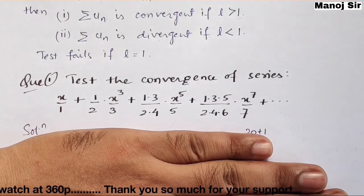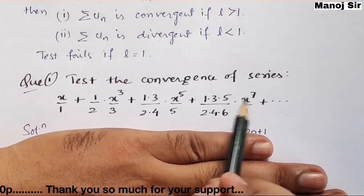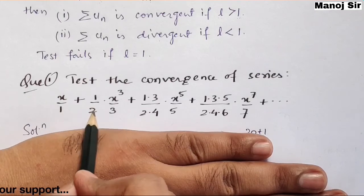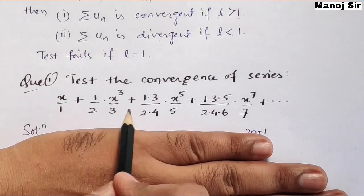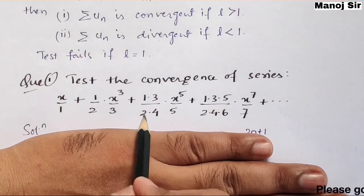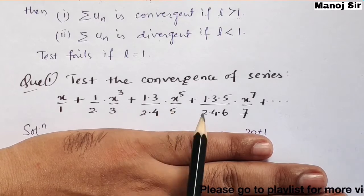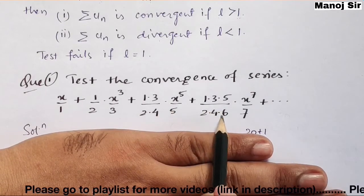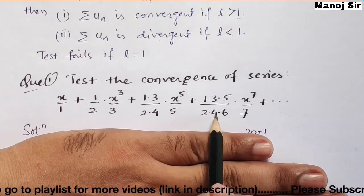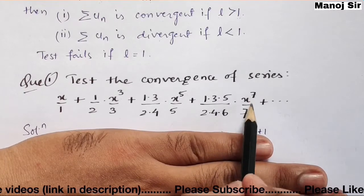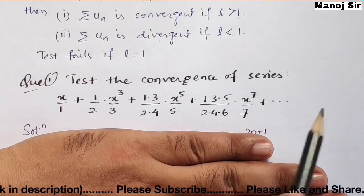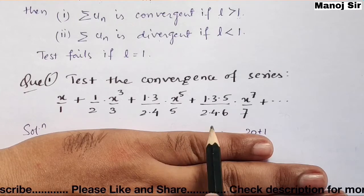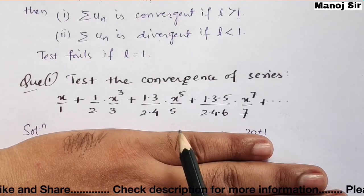Now we will solve this problem: test the convergence of the series x/1 + (1/2)(x³/3) + (1·3)/(2·4) · x⁵/5 + (1·3·5)/(2·4·6) · x⁷/7 + ... We need to find the nth term un first.